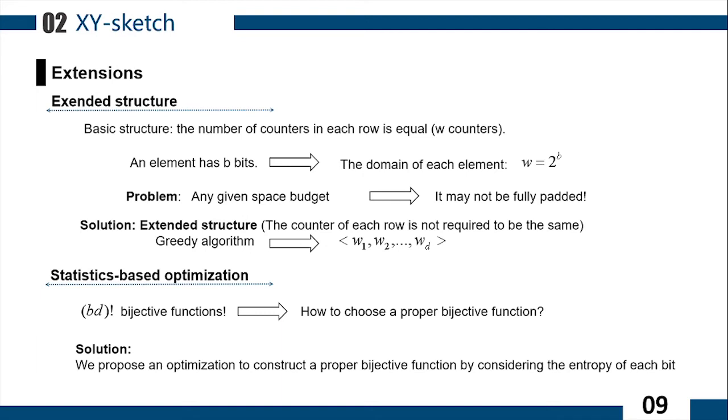There are lots of bijective functions that can be chosen in XY-Sketch. We introduce a statistics-based optimization tool to choose the proper bijective function of XY-Sketch. First, we calculate the entropy of each bit through a few items in the stream.